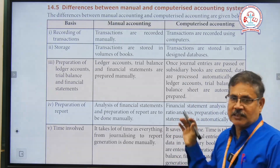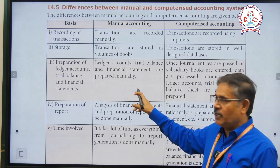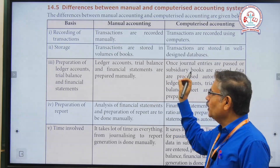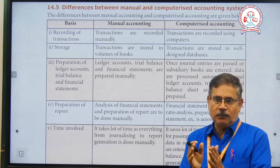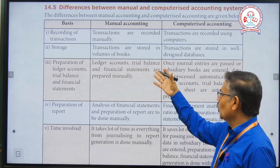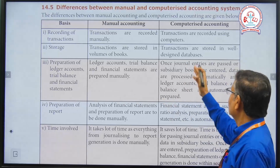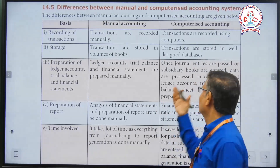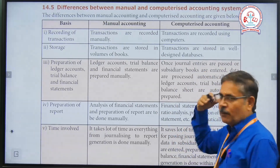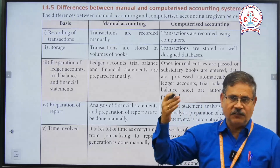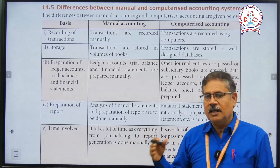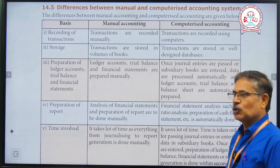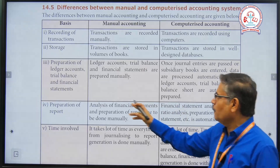The second point is storage. In the manual system, data is stored in voluminous books. But in the computerized system, transactions are stored in a well-designed database. We feed the database, and based on that database, we use the storage capacity.